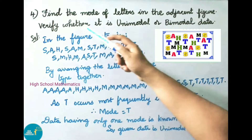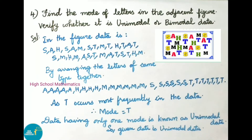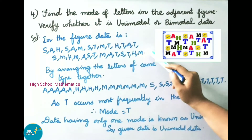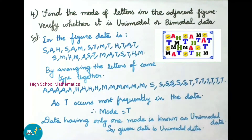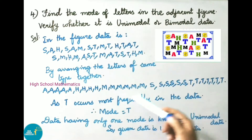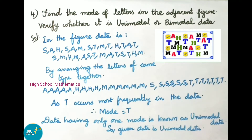Question 4: Find the mode of letters in the adjacent figure and verify whether it is unimodal or bimodal data. The given data is SAH, SAM, STMT, HTAT, SMHM, AST, MADS, and THM. Arranging letters of the same type together: A appears 5 times, H appears 4 times, M and S each appear 6 times, and T appears 7 times. Since T occurs most frequently, mode equals T. Data having only one mode is unimodal, so the given data is unimodal data.